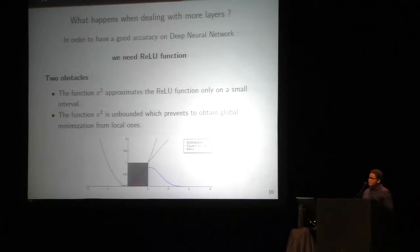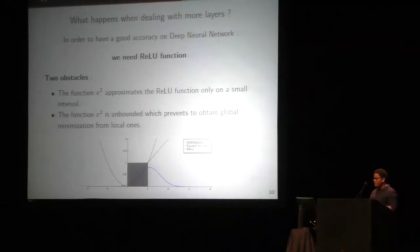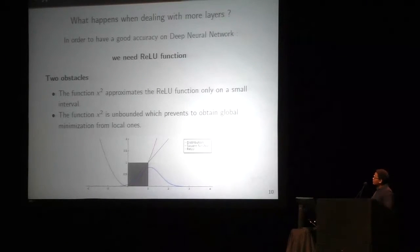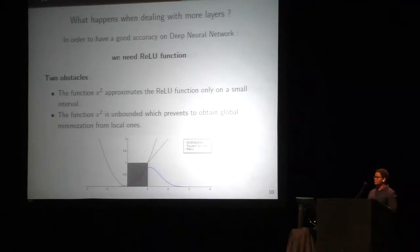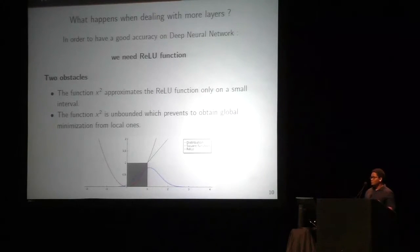As I said previously, CryptoNet has good performance on a light CNN. But what happens when dealing with more layers — that is, a deep neural network? The state of the art shows that in order to have good accuracy on a deep neural network, you need a rectified linear function. But the problem with CryptoNet is that it replaces this function with a square function, and the square function only approximates the rectified linear function over a small interval.